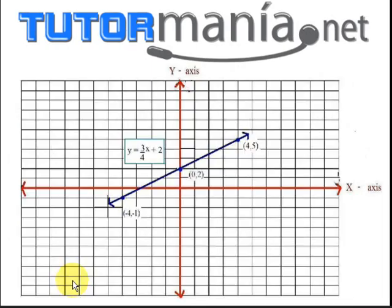Then you want to go ahead and draw your line. Make sure you put your arrows, because lines go on forever. And also, I'm sure your teacher tells you, every line has a name. And the name of the line is the equation. So this line can be identified as y equals 3 fourths x plus 2.